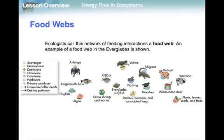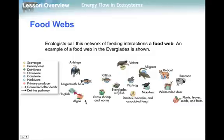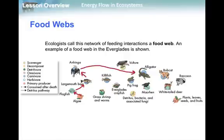A food chain is very simple, though. Food webs are much more like what it is like in the environment. If we look at this food web, there are a lot more organisms. We can recreate our previous chain within it: algae eaten by the flagfish, the flagfish eaten by the largemouth bass, the largemouth bass eaten by the anhinga, and the anhinga eaten by the alligator. Our previous food chain is included in this single food web. Ecologists call a network of feeding interactions a food web — this is an Everglades food web.